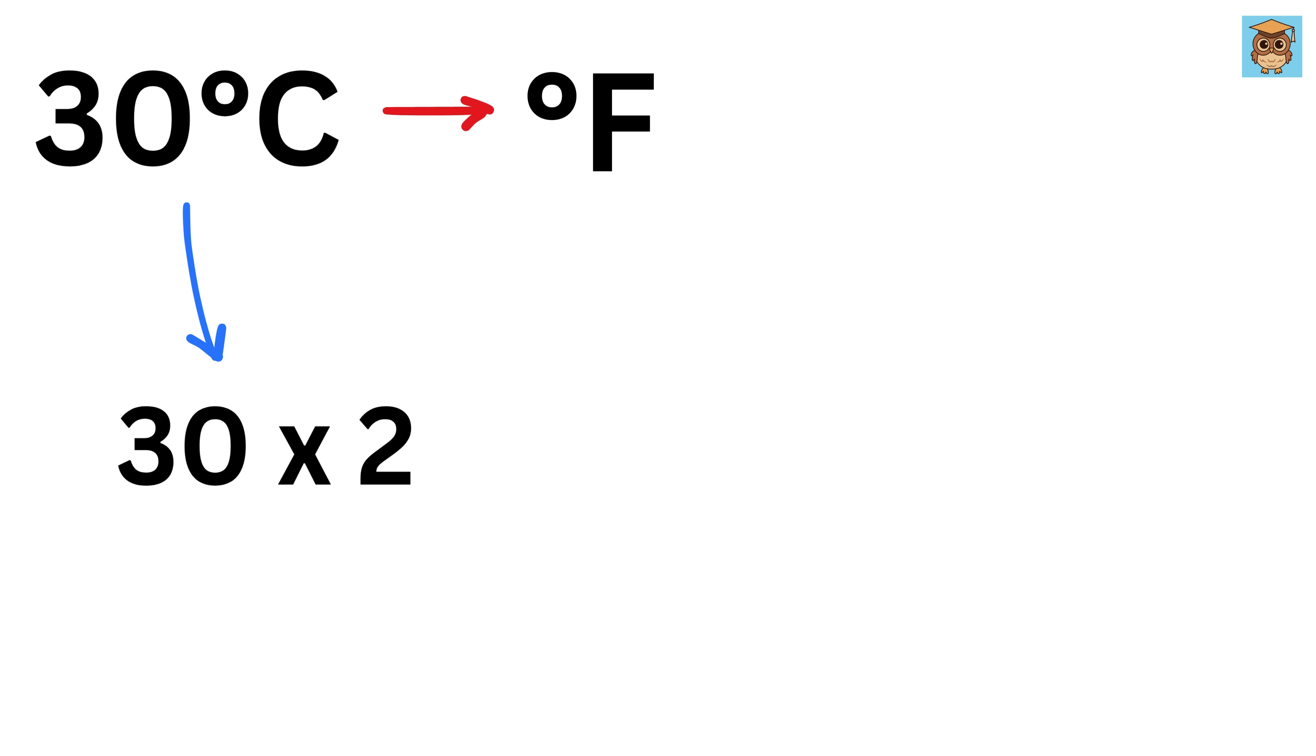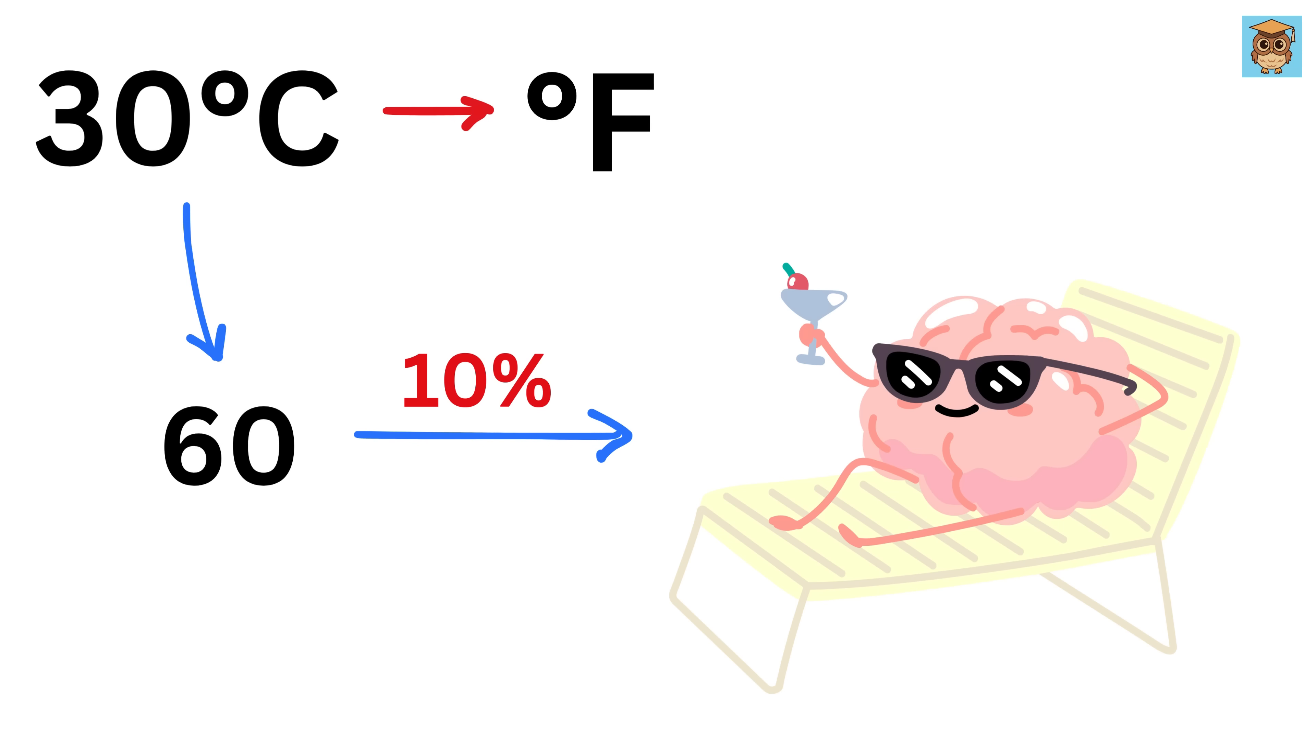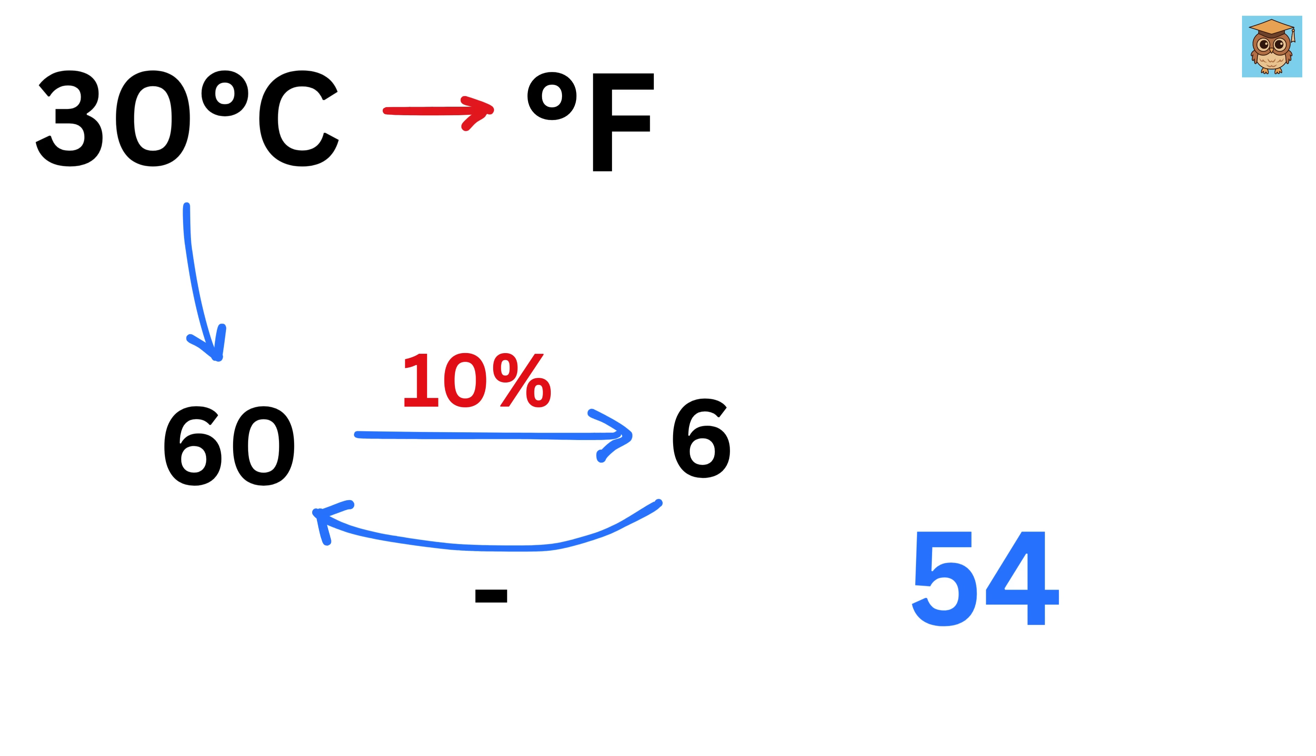First double the Celsius value, so 30 becomes 60. Now calculate what is 10% of this doubled value, or 10% of 60. It's super simple right, it will be 6. Now subtract it with this 60 to make it 54.